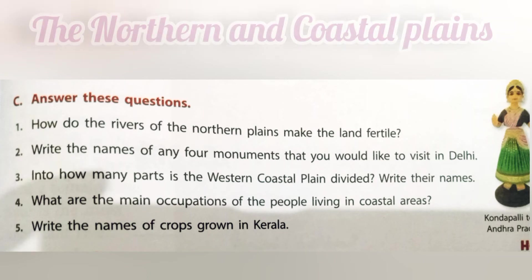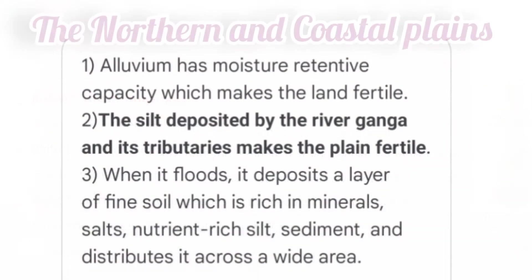Question 1: How do the rivers of the northern plains make the land fertile? Answer: Alluvium has moisture-retentive capacity which makes the land fertile. The silt deposited by the river Ganga and its tributaries makes the plain fertile.